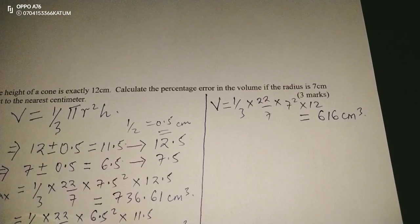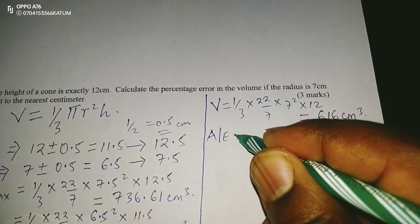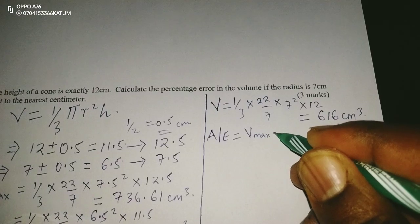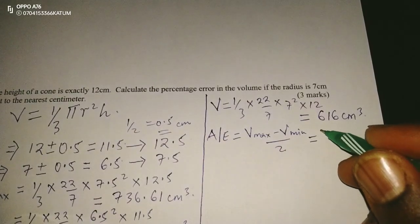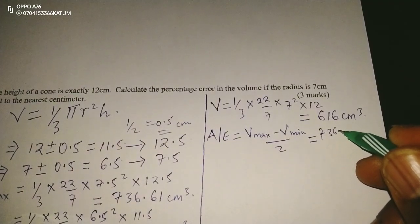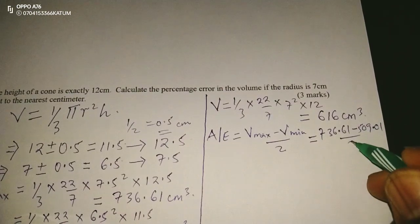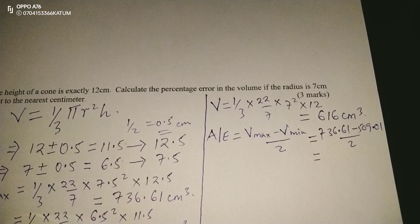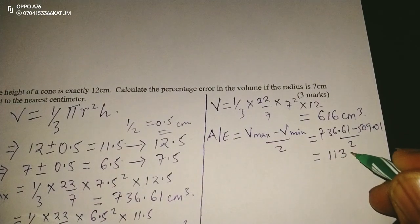So we have maximum, minimum, and working volumes. We now get the absolute error, which is given by (maximum volume minus minimum volume) divided by 2. That is (736.61 minus 509.01) divided by 2, which gives us 113.8.